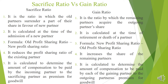The second difference: sacrifice ratio is calculated at the time of admission of a new partner, whereas gain ratio is calculated at the time of retirement of a partner. Third difference — the formula: sacrifice ratio = old profit sharing ratio minus new profit sharing ratio. Gain ratio is quite the reverse: new profit sharing ratio minus old profit sharing ratio. Fourth: sacrifice ratio reduces the profit sharing ratio of the existing partners, whereas gain ratio increases the share of the remaining partners.